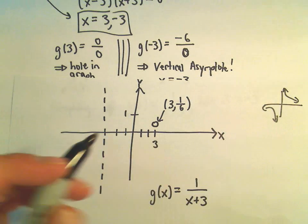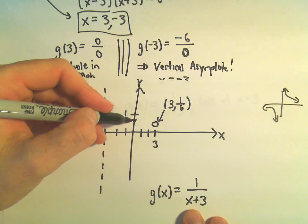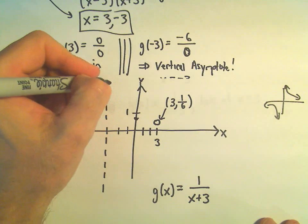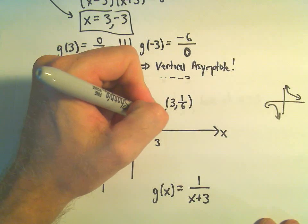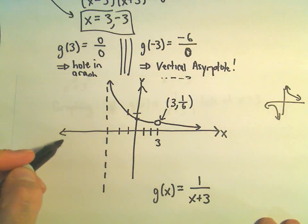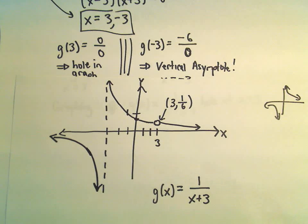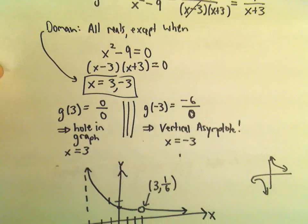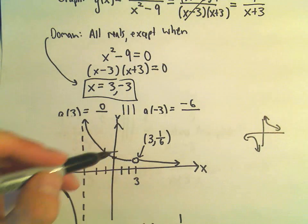The graph has the same basic shape as 1 over x, just shifted over. If we plug in 0, we get 1 third for the y-intercept, which is a little higher. The graph goes up through its y-intercept, and at the x-coordinate of 3 with y-coordinate of 1 sixth, we have a little open circle. Then it hangs out in the bottom-left region, going down to negative infinity and leveling out at the x-axis as you move left. The basic idea is we took 1 over x, moved it 3 units to the left, and marked the hole at the point 3 comma 1 sixth.